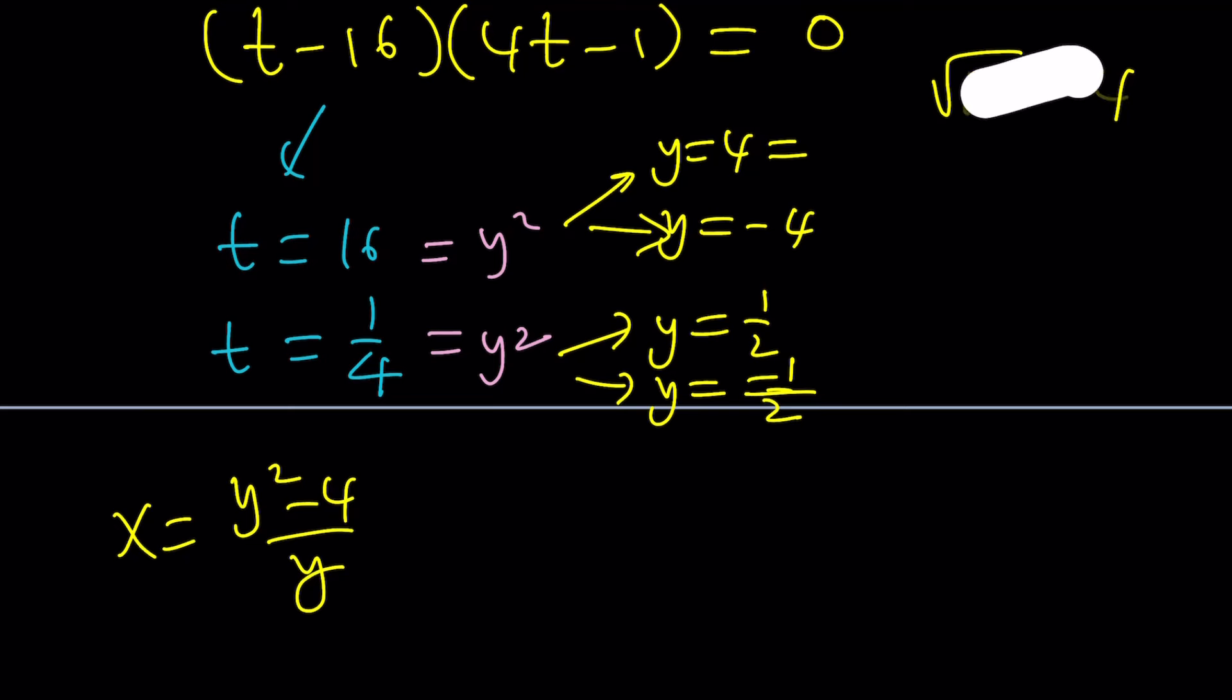you can go ahead and plug in y equals 4 here. 16 minus 4 is 12. 12 divided by 4 is just going to be 3. So if y is 4, x is 3, in other words, 3 comma 4 is going to be one of the solutions. But it's only going to be one of the solutions. And how do you find the other ones? The same way.